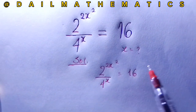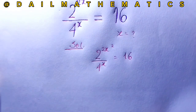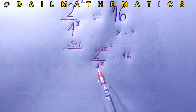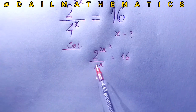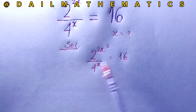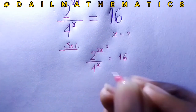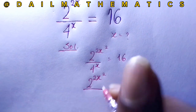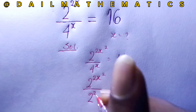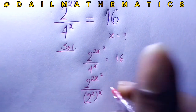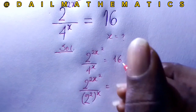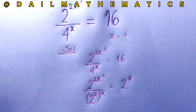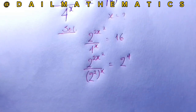The first approach we take is to notice that all these numbers are multiples of 2 — we have 2, 4, and 16. So we rewrite: 2 raised to the power of 2x squared, over 2 squared raised to the power of x, equals 16, which becomes 2 raised to the power of 4.